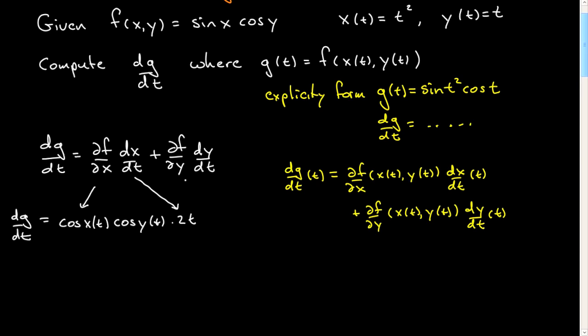And now I'm going to run a little bit out of room, but I'll go down a little bit here. Plus df dy. So I have to differentiate this with respect to y. Sine of x of t. Derivative of cosine is minus the sine. I'm going to put the minus sign out here. Of y of t. That's this. And now I have to add on the derivative of y with respect to t, which is simply 1.